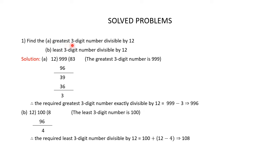Since you are asked to find the greatest 3-digit number divisible by 12 exactly, the required greatest 3-digit number exactly divisible by 12 is equal to the greatest 3-digit number minus remainder, that is 999 minus 3, which gives 996. 996 is completely divisible by 12, so 996 is the greatest 3-digit number exactly divisible by 12.